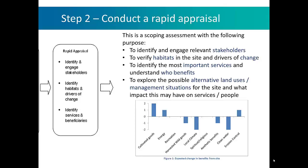An example graph shows one of the outputs of a rapid appraisal — essentially a two-part questionnaire that people work through. It shows very simply what a group felt might be the changes from an alternative land use in terms of a number of ecosystem services, with some increasing a small amount or a lot and some decreasing a small amount or a lot.